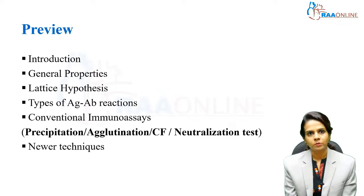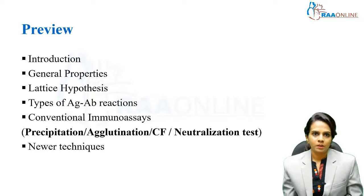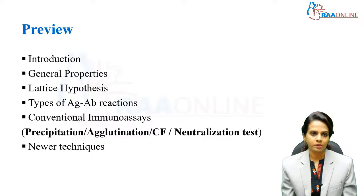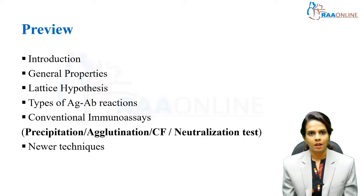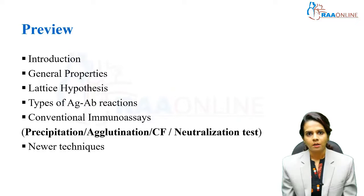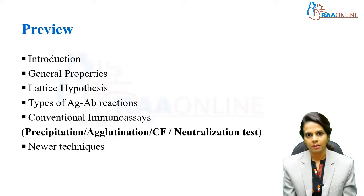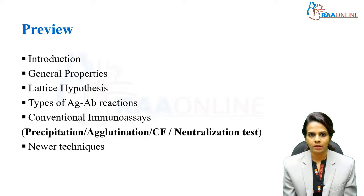Moving on to the lecture preview, today I will be discussing the introduction to antigen-antibody reaction, general properties of antigen-antibody reaction, the lattice hypothesis, and types of antigen-antibody reactions. These are broadly classified into conventional immunoassays and newer techniques. Conventional immunoassays include precipitation, agglutination reaction, complement fixation, and neutralization test.